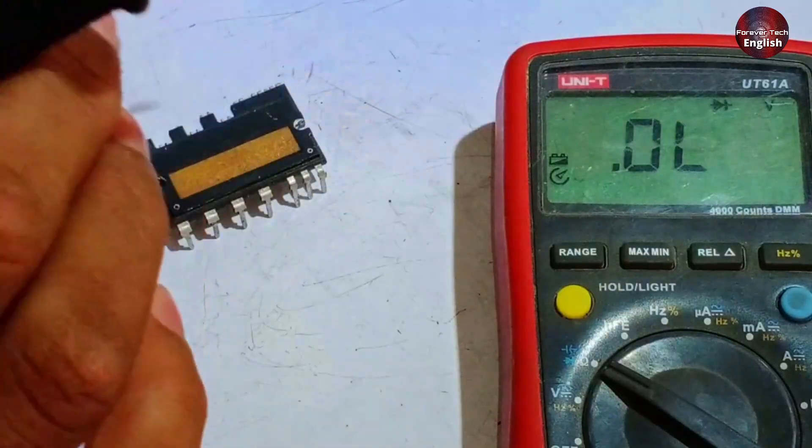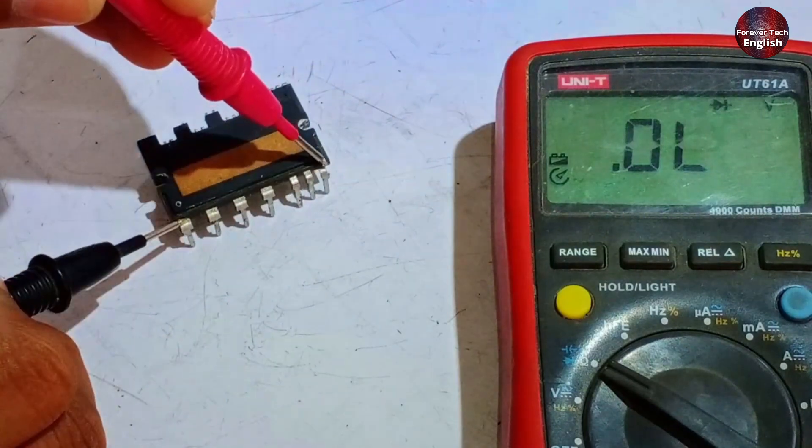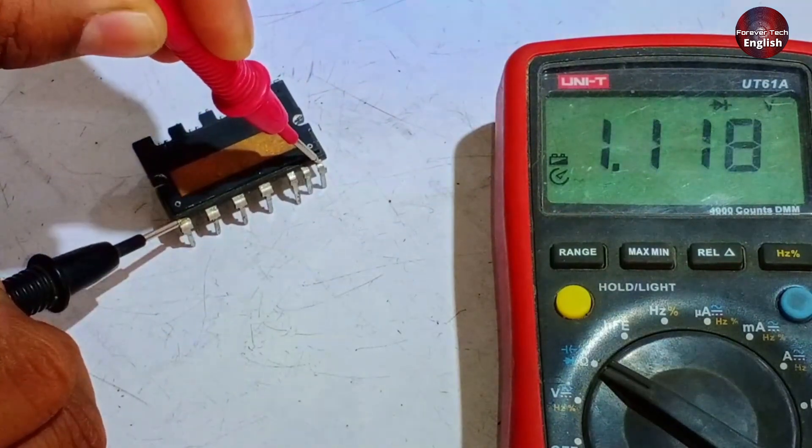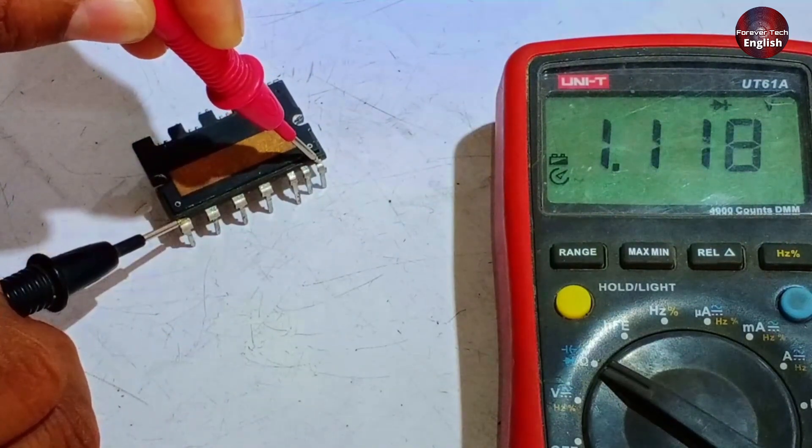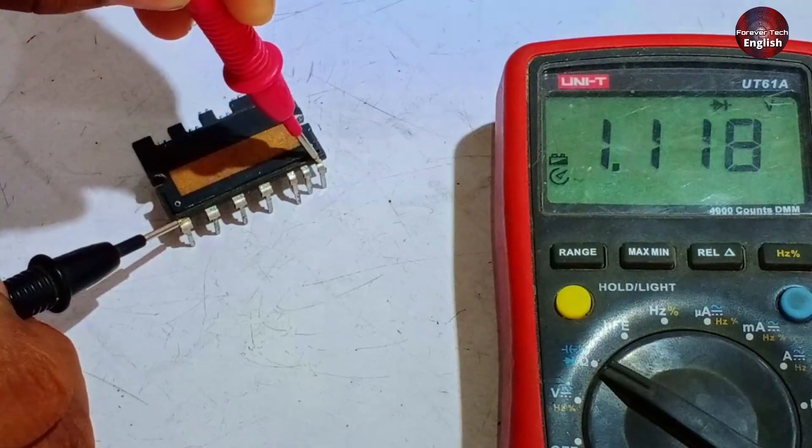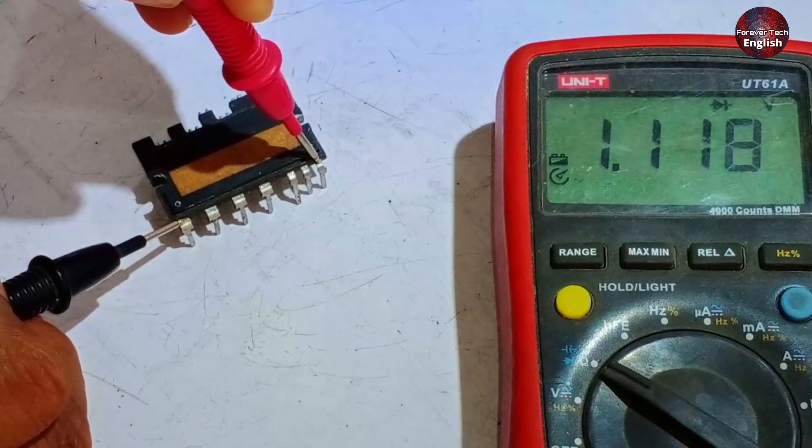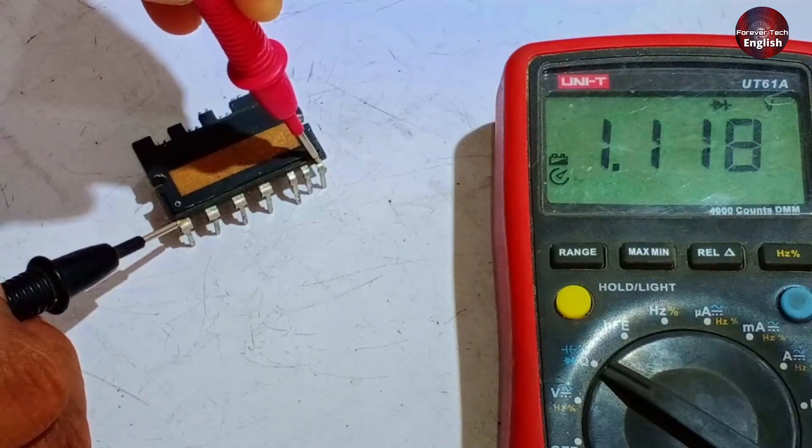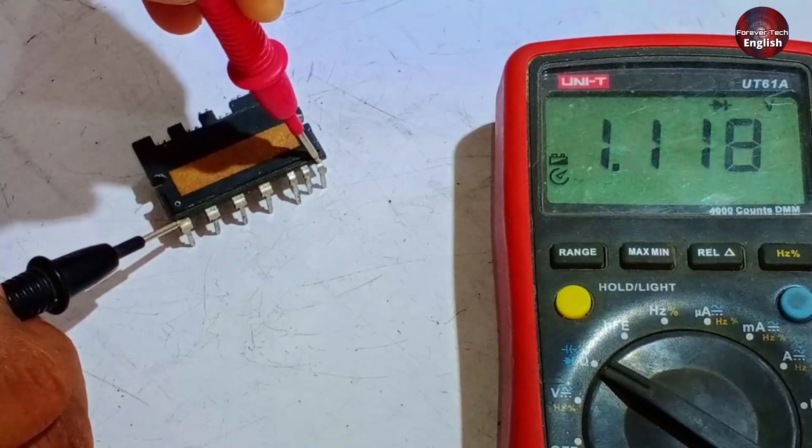First, place the negative probe on pin 27 and the positive probe on pin 21. You should see a value here, and it should show double because we are checking this across two diodes. The double voltage drop is correct, and it's showing 1.18, which means this part is working fine.